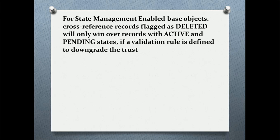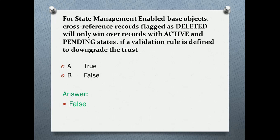Next question: for state management enabled base objects, cross-reference records flagged as deleted will only win over records with active and pending state if a validation rule is defined to downgrade the trust — is it true or false? Normally, with state management enabled, a soft-deleted record goes into a minus-one state. The answer is false. We cannot win a deleted record over active and pending records, even by reducing trust. By default, MDM wins the active record first.